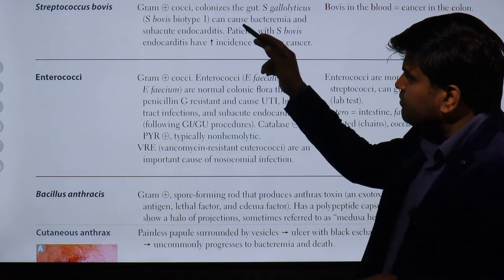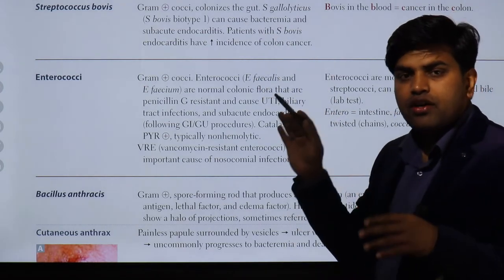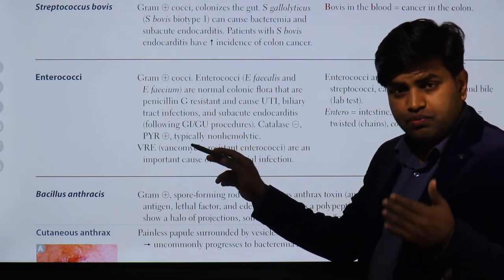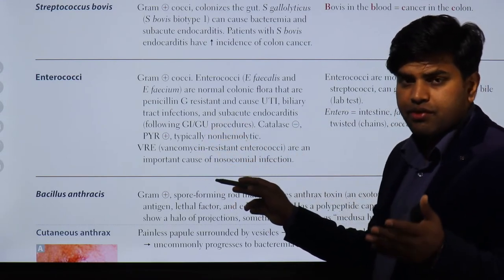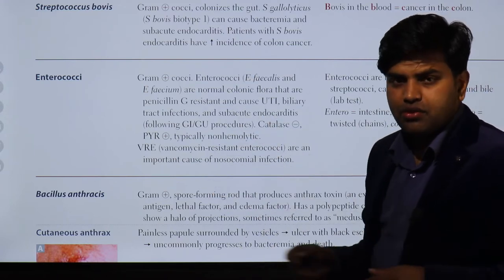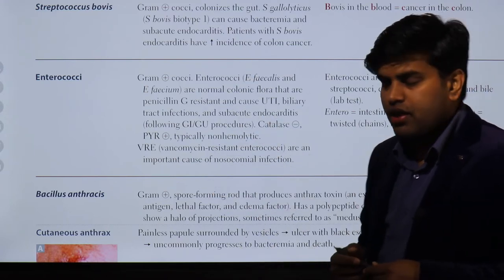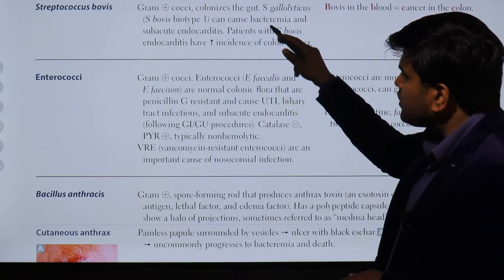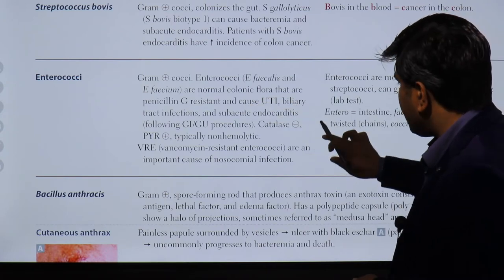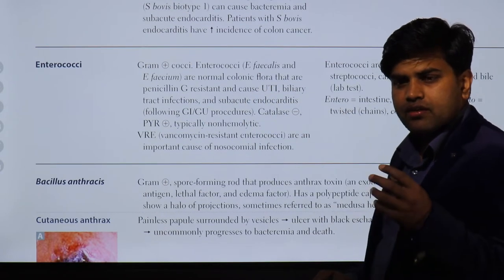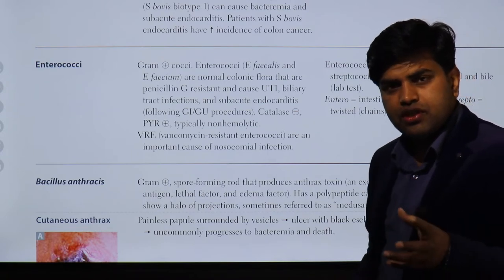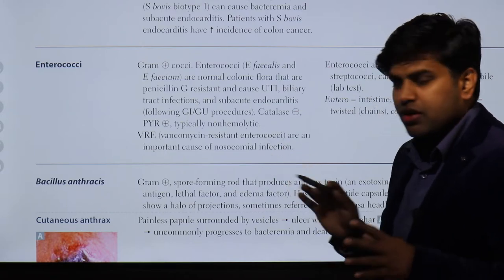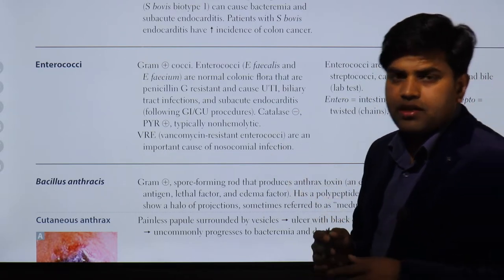To differentiate enterococci from Streptococcus bovis: both are non-hemolytic (gamma hemolytic). Enterococci were not able to grow in 6.5% NaCl, but Streptococcus bovis easily grows in 6.5% NaCl. Now, enterococci are a nasty bug — they are commonly involved in hospital-acquired infections, and you will deal with many enterococcal infections in a medical setting.